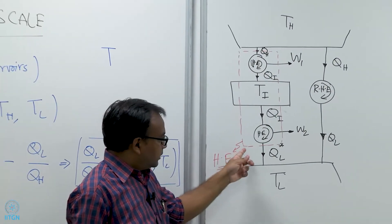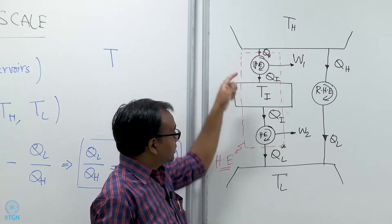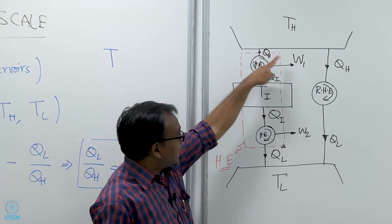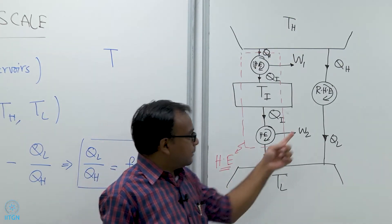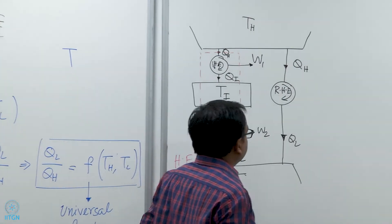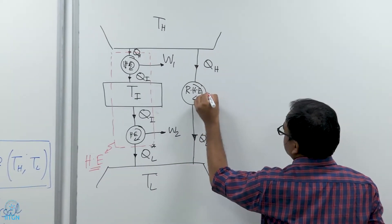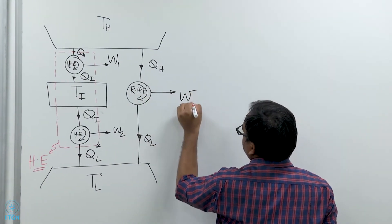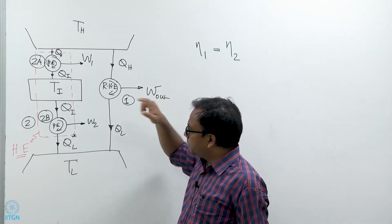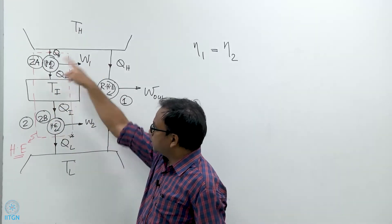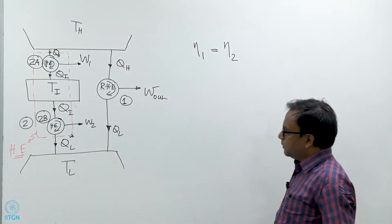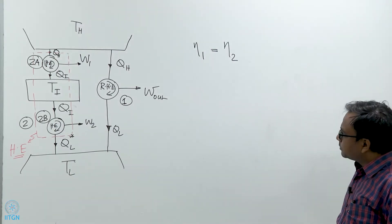This entire big heat engine is a reversible heat engine because all of its components are reversible. At the same time, this is another reversible heat engine working directly between reservoirs T_H and T_L. Using Carnot's principle, we can say that the efficiency of the big heat engine and the efficiency of this direct heat engine have to be the same.